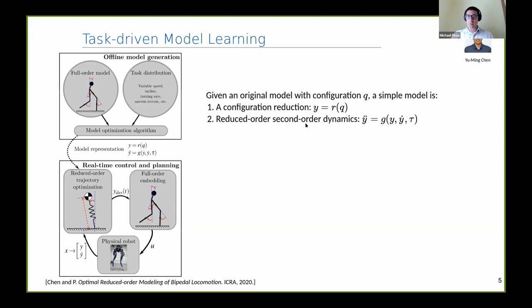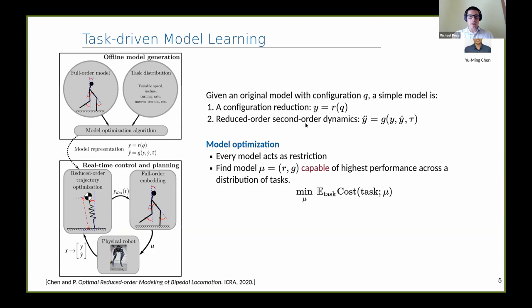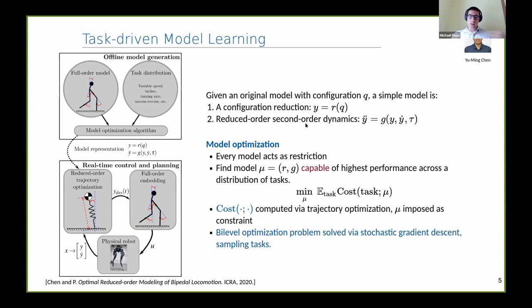We can pose this optimization, you might call it learning algorithm, where we optimize over the model such that when you force your very complicated robot to act like the simple thing, because you can do real-time control on the simple thing, you achieve low cost over some set of tasks. We get this bi-level optimization problem where we embed trajectory optimization in the loop. We have this bi-level problem where we're sampling tasks, solving trajectory optimization, and so on.